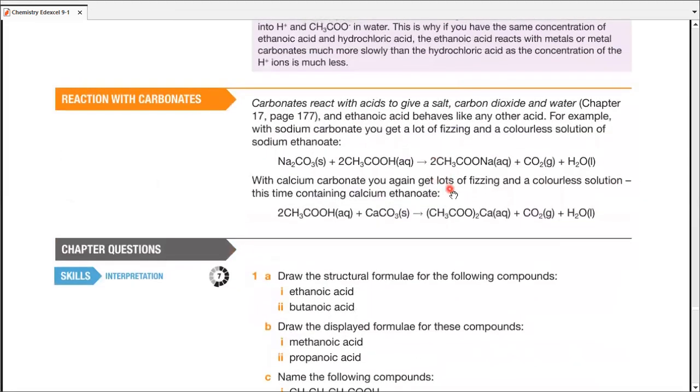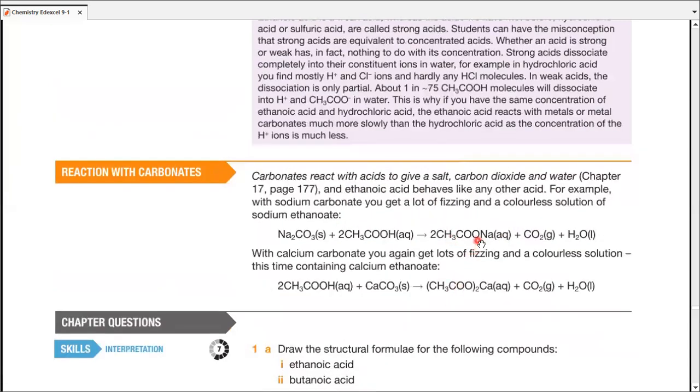Next up, reaction with carbonates. As I told you earlier, they're going to give salt, carbon dioxide, and water. The same thing happens. Carbon dioxide is a gas. You get a lot of fizzing and effervescence. A colorless solution of ethanoate. So if you're reacting it with sodium, sodium ethanoate. If you're reacting it with calcium, calcium ethanoate. So the salt really depends upon which kind of carbonate you're reacting it with. And the rest, water and carbon dioxide is the same for both kinds of reactions. And this is actually the end of the carboxylic acid chapter. Any questions?